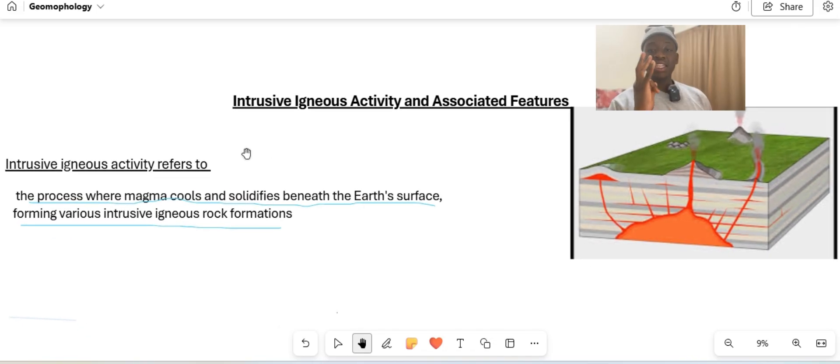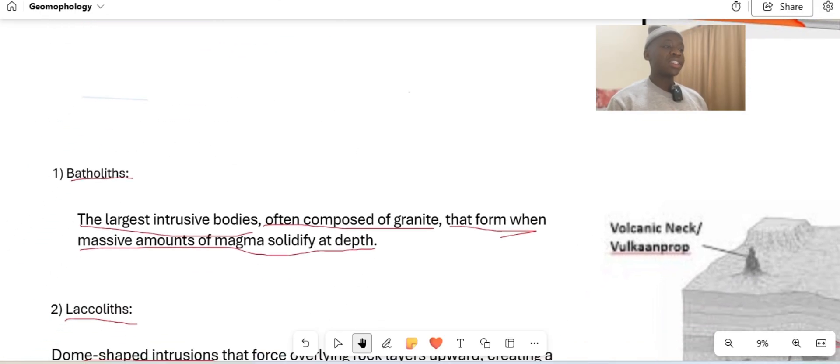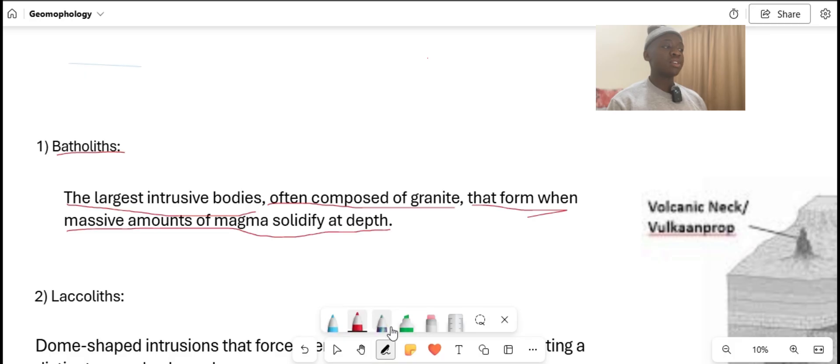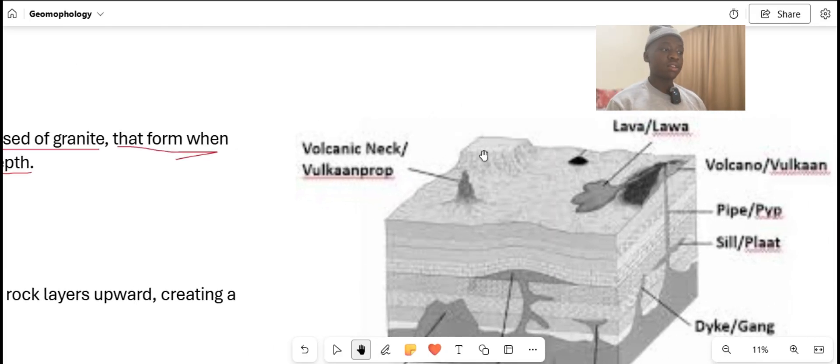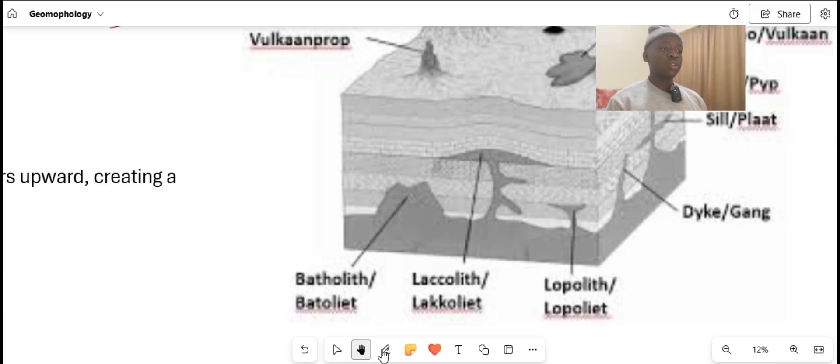We're going to talk about three types of igneous rock. The first one is the batholith. The batholiths are the largest intrusive bodies, often composed of granite, that form when massive amounts of magma solidify at depth. Batholiths are the hugest or the biggest rocks that can be found underneath.